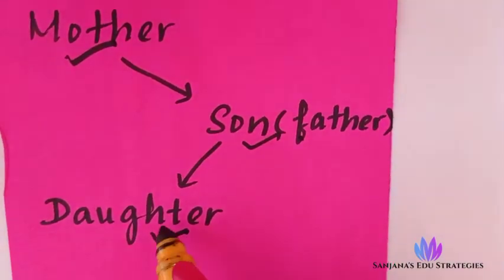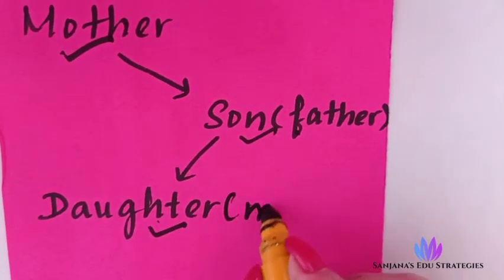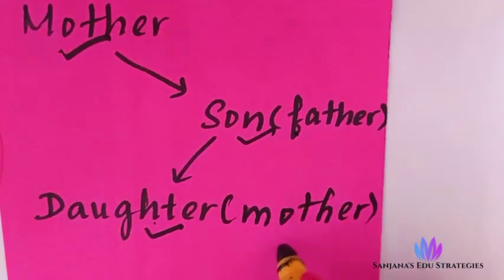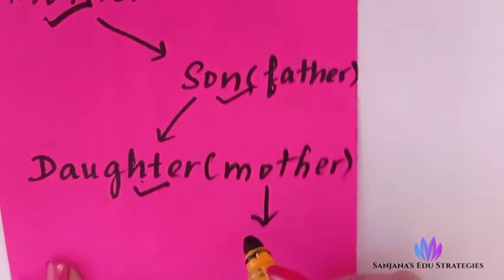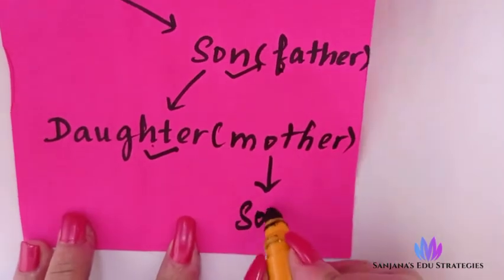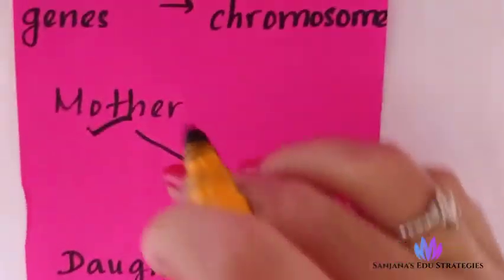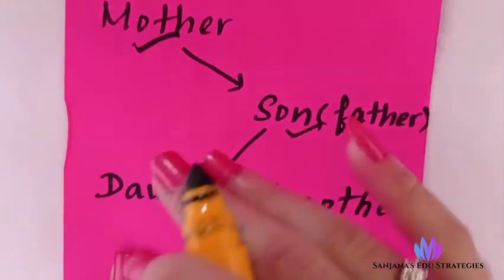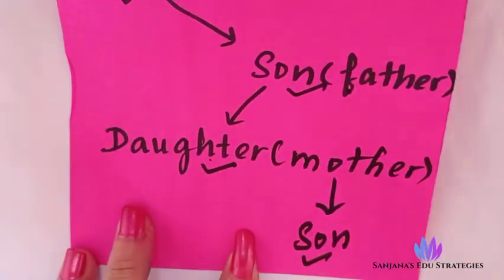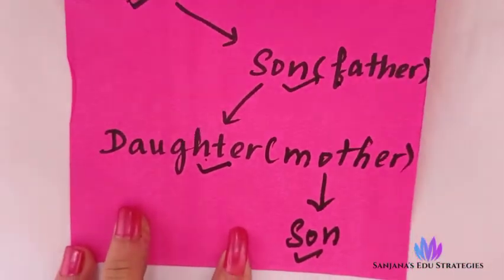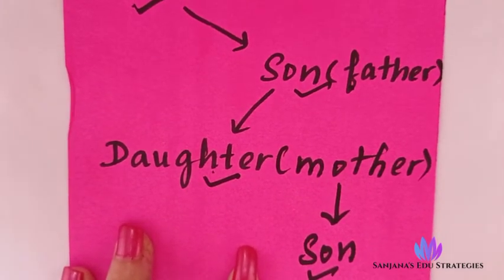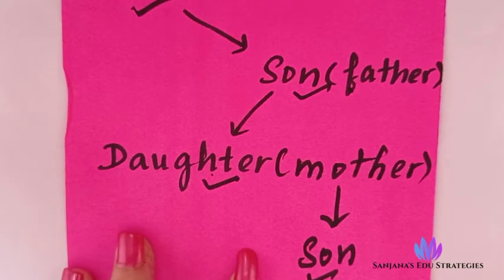Once this daughter becomes a mother, if this mother has a son, that son will get the disease. So from female to male, male to female, female to male — like this the disease is inherited in a crisscross manner. That is why it is known as crisscross inheritance. Remember: only recessive genes of the X chromosome will be affected.